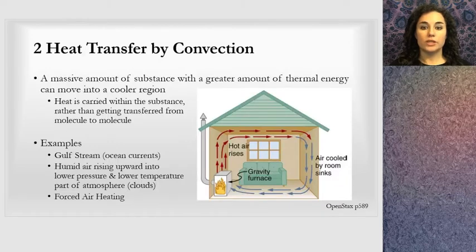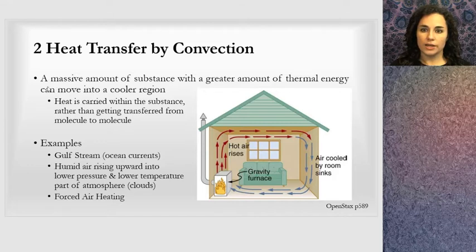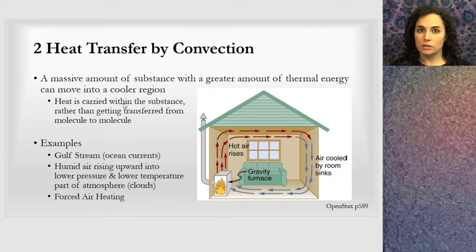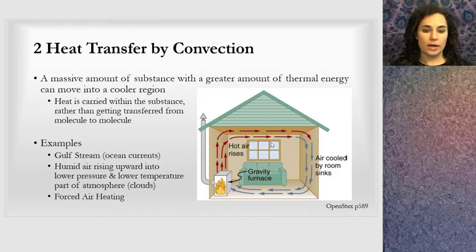The second method of heat transfer is by convection. Convection is defined as a massive amount of a substance with a greater amount of thermal energy moving into a cooler region. Heat is carried within the substance. The whole substance moves. It's not that heat is moved from one molecule to another in the substance, but all of this big mass of a substance moves and carries heat into an area. We can see this convection example from the text. There's a fire, and hot air rises. Hot air is less dense than cool air, so it will rise.